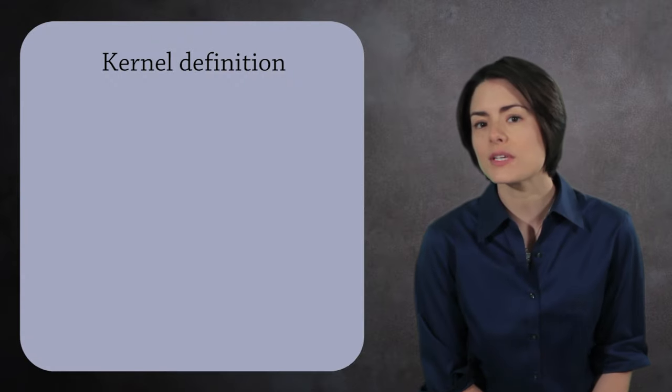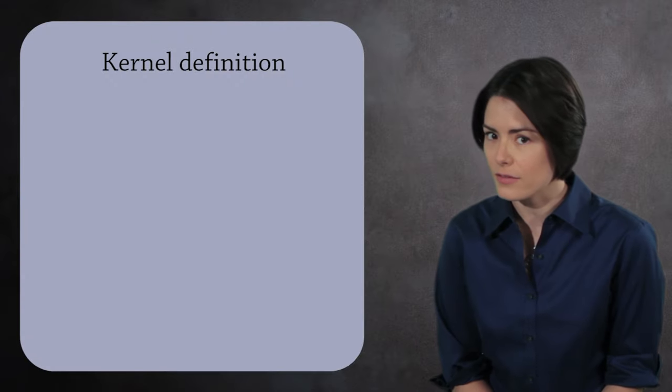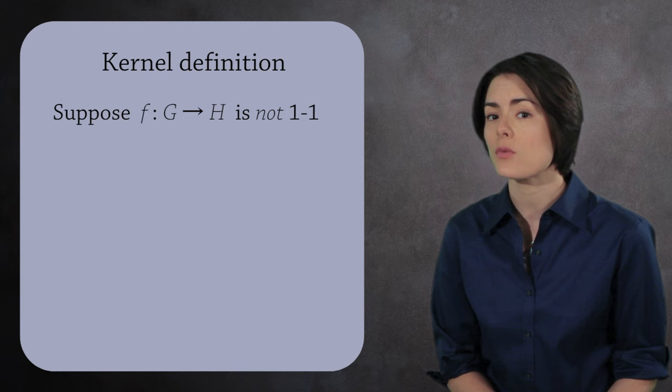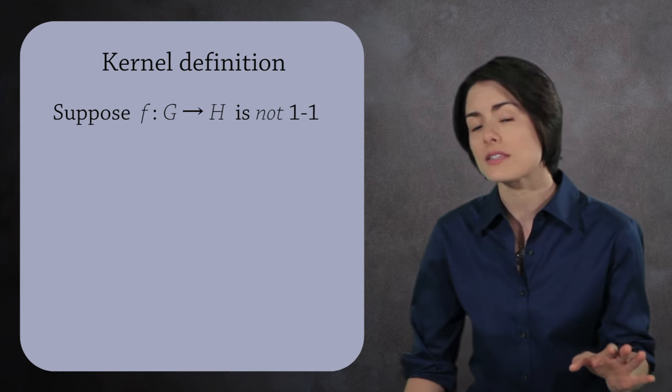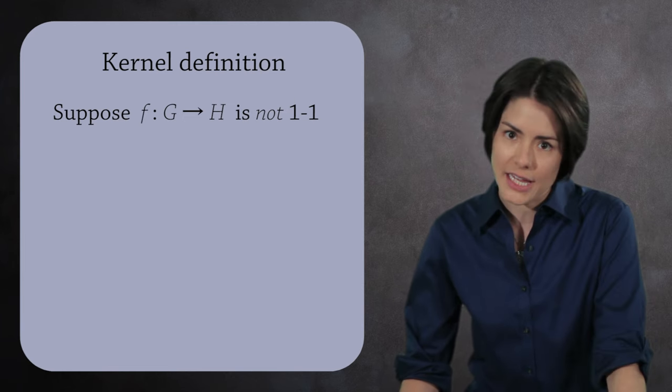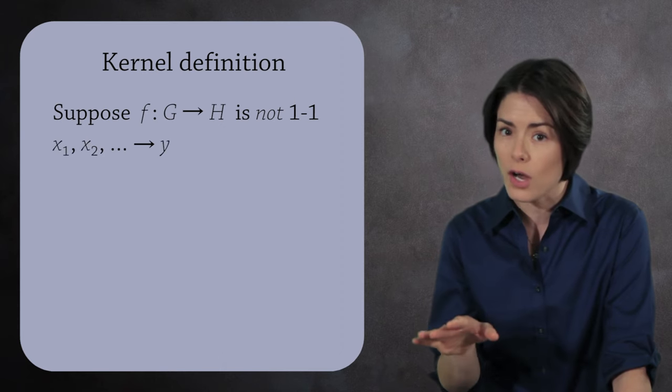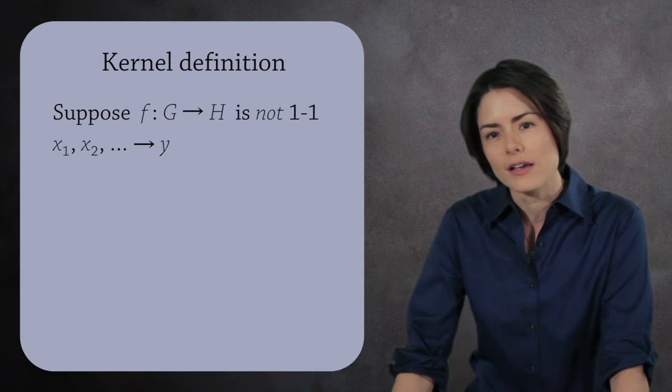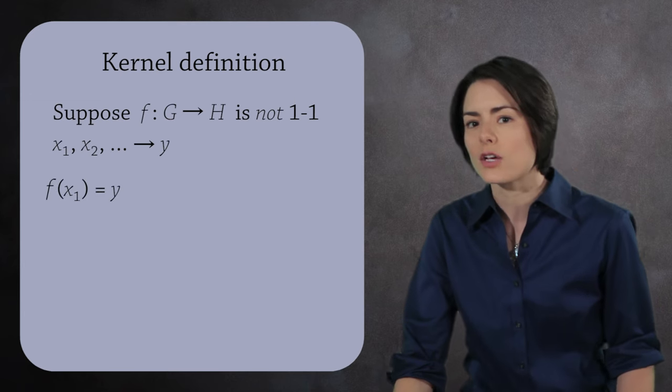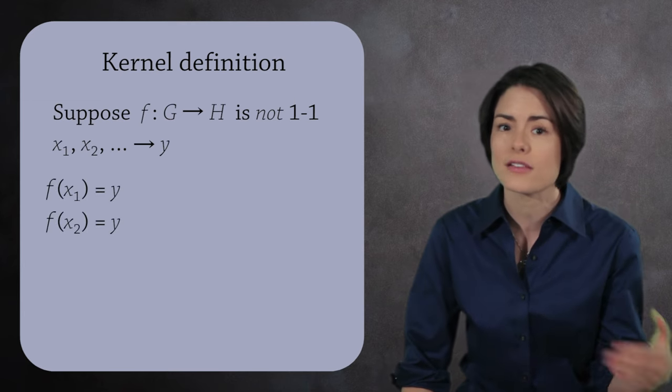We now have all the tools we need to define and understand the kernel. Suppose that f is not one to one. Then there are at least two elements in G which map to the same element in H. To be concrete, suppose x1, x2, and so on are the elements which map to y. This means f of x1 equals y, f of x2 equals y, and so forth.